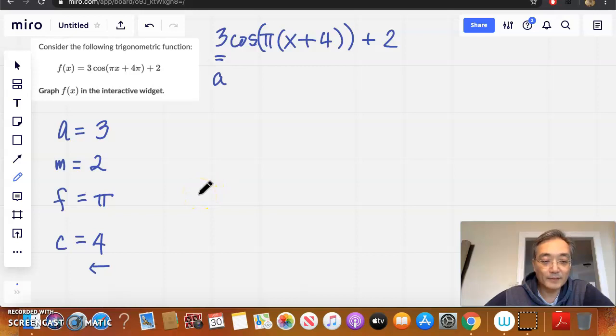So now, again, using the amplitude and the midline, let's find the max and the min. Our max and our min. So, again, max is the midline plus the amplitude. So 3 plus 2 is 5. Our minimum is the midline minus the amplitude. So it's 2 minus 3 is equal to negative 1. Here's our max and here's my min.